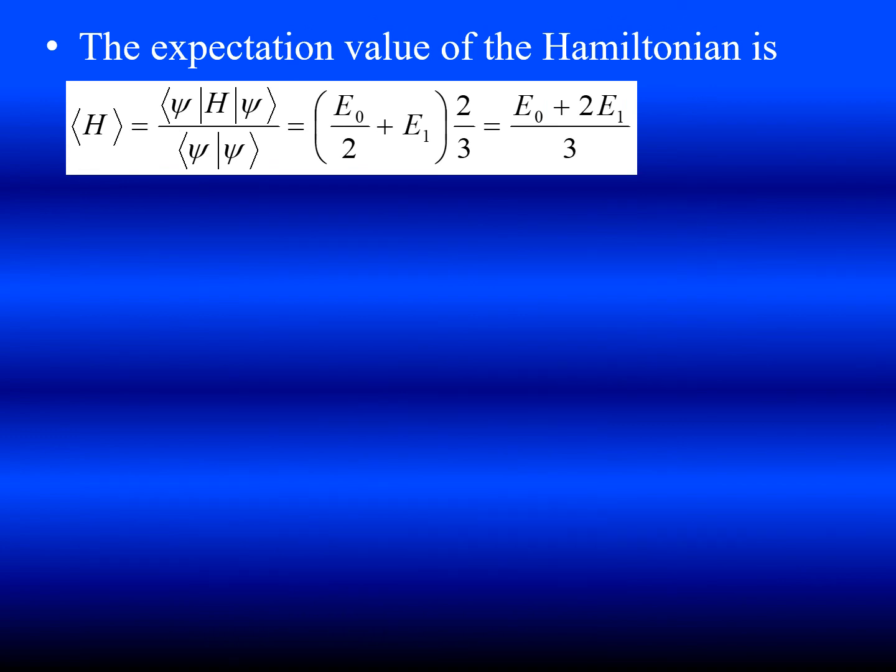Now you substitute this value and we can get the expectation value of the Hamiltonian is E naught plus 2 E1 divided by 3. Thank you.